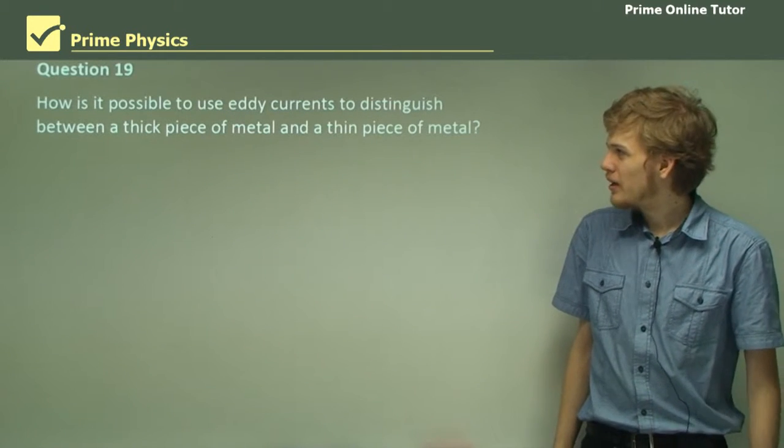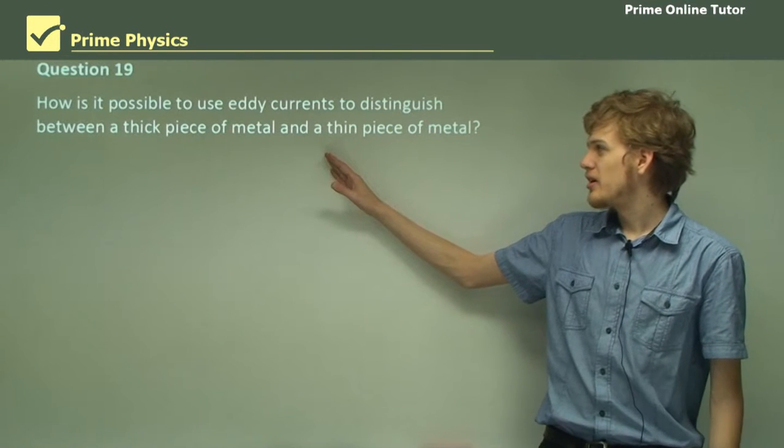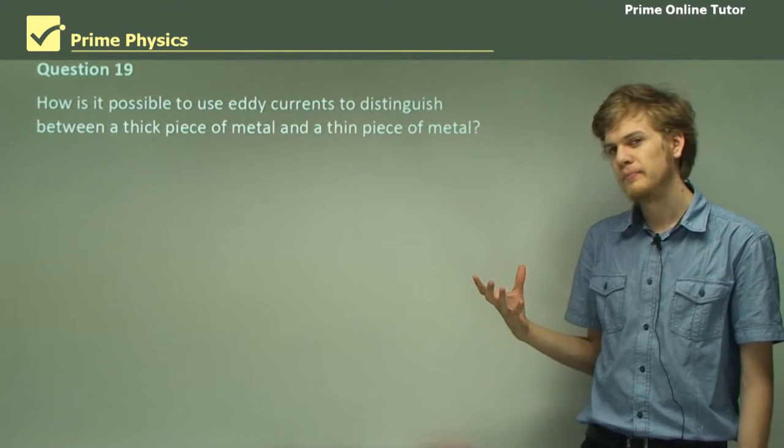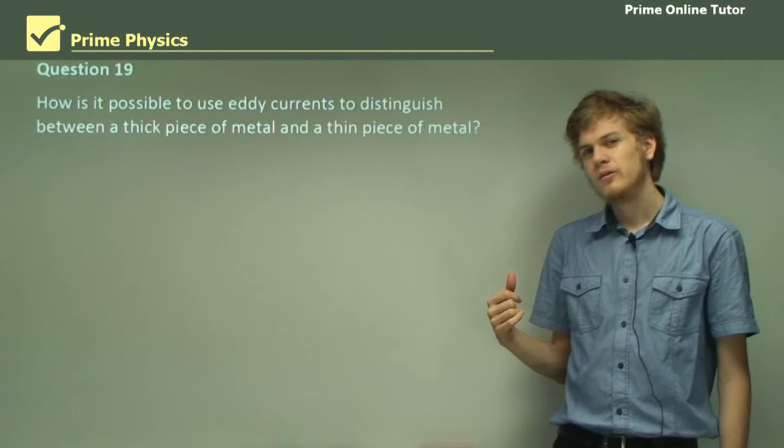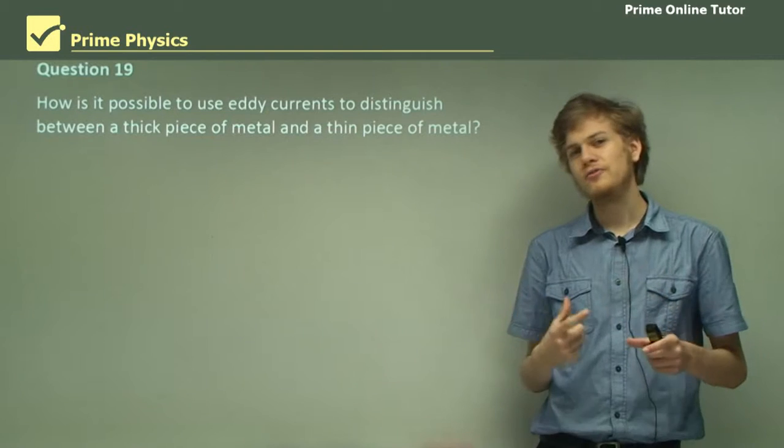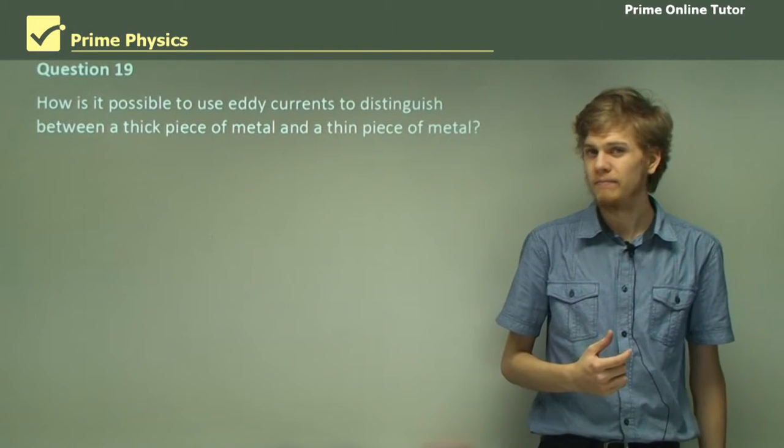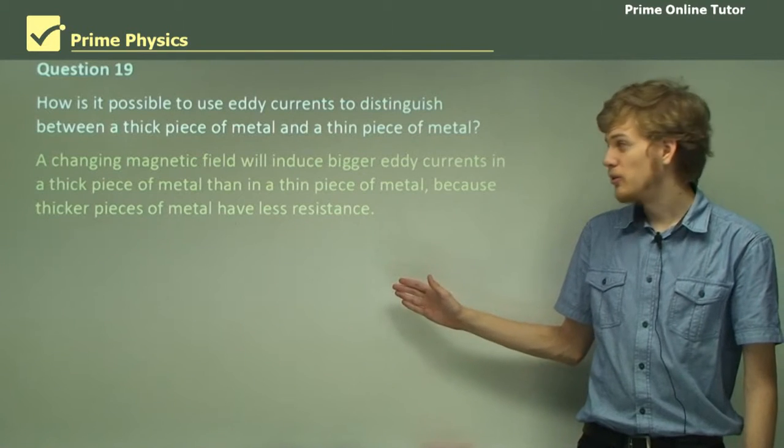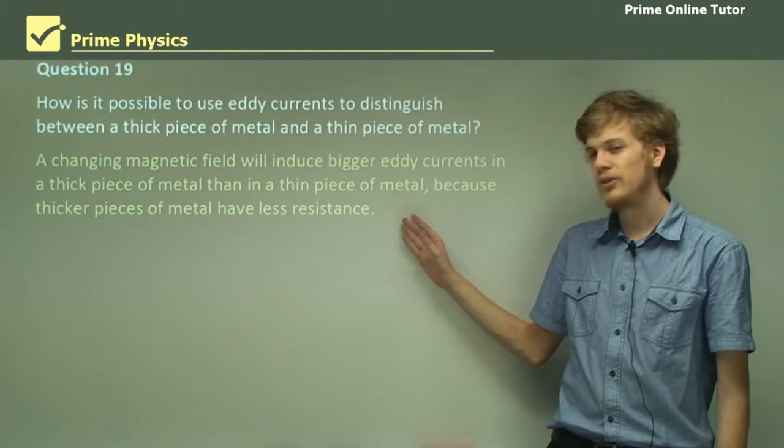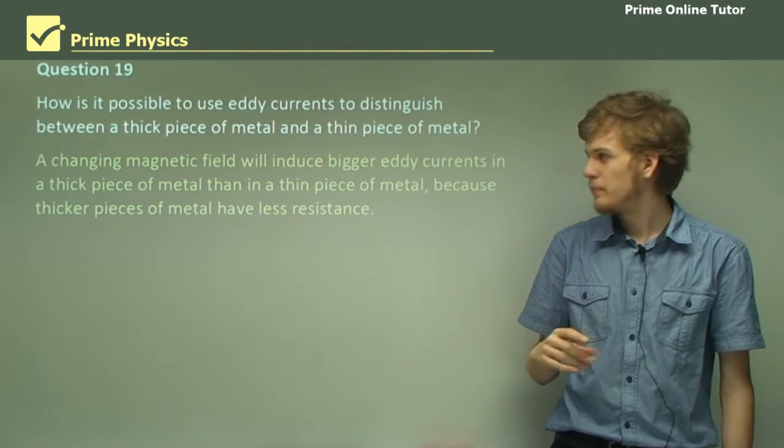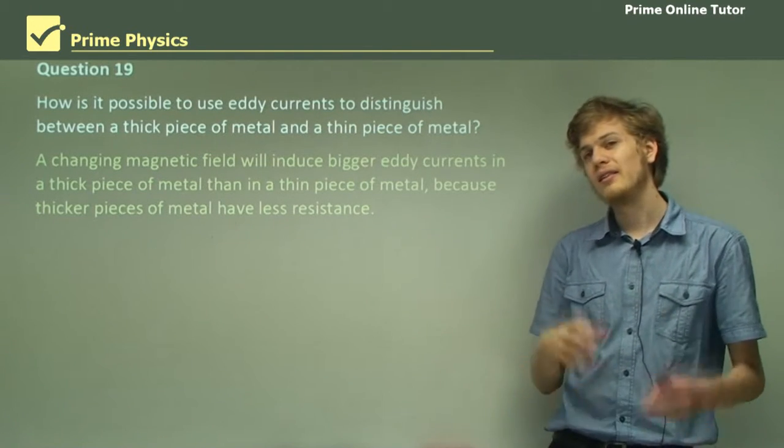Question 19. How is it possible to use eddy currents to distinguish between a thick piece of metal and a thin piece of metal? Remember, the thicker a piece of metal is, the more eddy currents can fit inside it. A changing magnetic field will induce bigger eddy currents and more eddy currents in a thick piece of metal than in a thin piece of metal. The thicker piece of metal has less resistance.